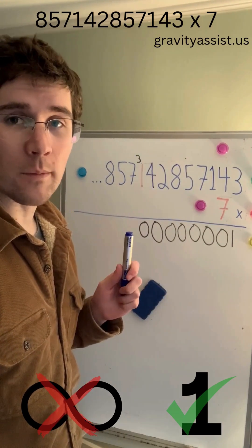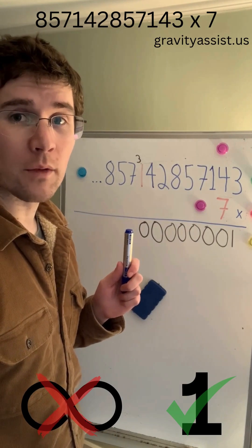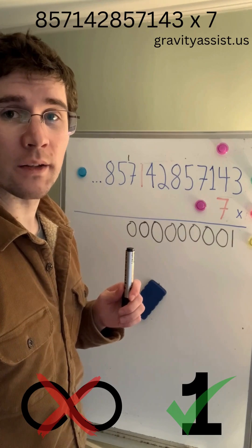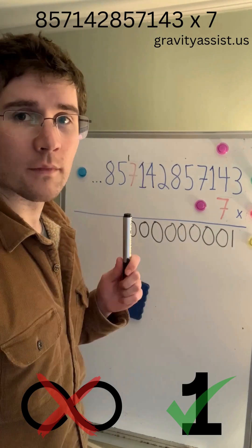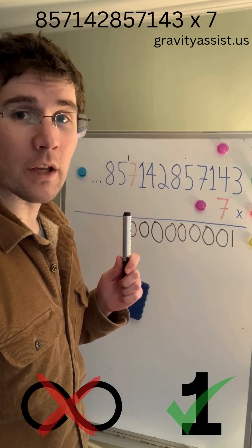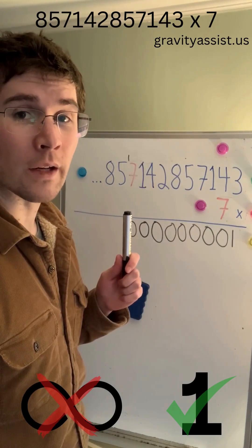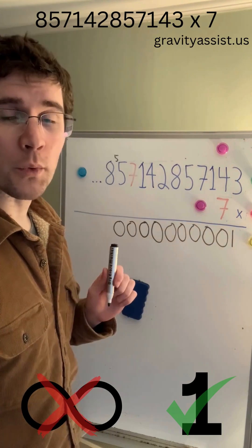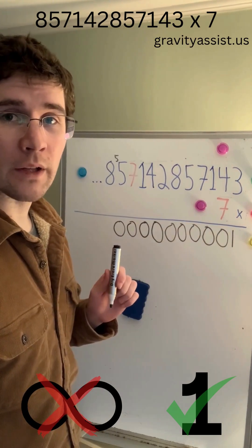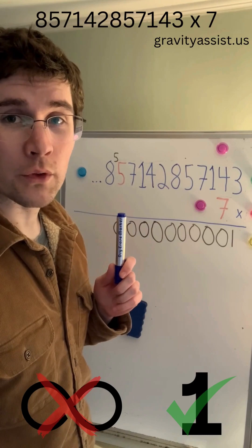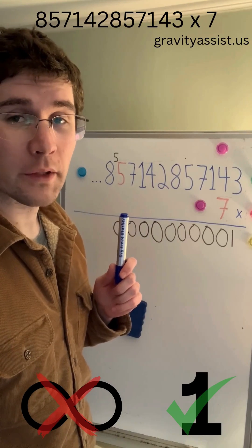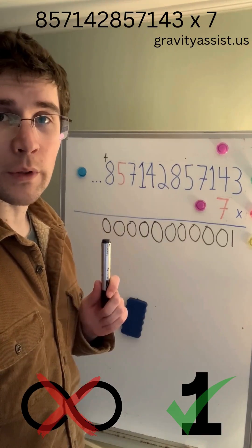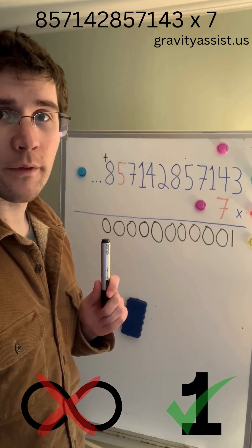7 times 1 equals 7 plus 3 equals 10, so we'll put a 0 down here and carry the 1. 7 times 7 equals 49 plus 1 equals 50, so we'll put a 0 down here and carry the 5. 7 times 5 equals 35 plus 5 equals 40, so we'll put a 0 down here and carry the 4.